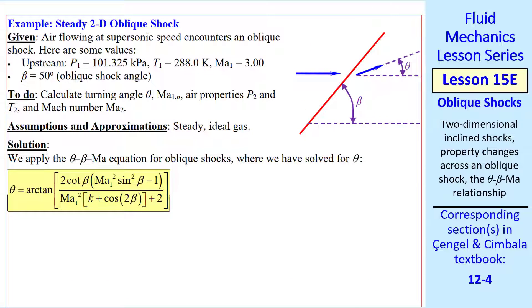Now let's do some example problems. Air flows across an oblique shock. We always label the regions 1 and 2. In this problem we give the upstream pressure, temperature, and Mach number. And we also give the oblique shock angle beta. We want to calculate the turning angle theta, the normal component of Mach number, MA1N, Mach number 2, and P2, and T2. We approximate that the flow is steady and the air is an ideal gas. We apply the theta-beta Mach number equation, where we solve for theta by taking the arctangent of the quantity we had in brackets.